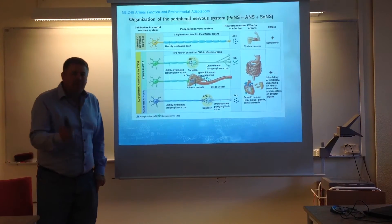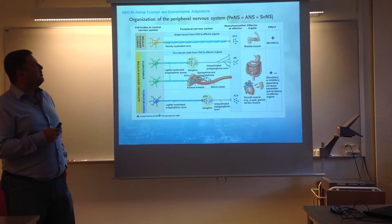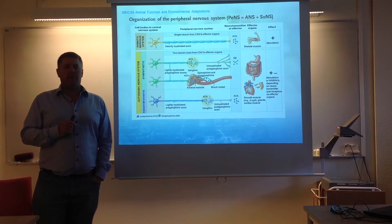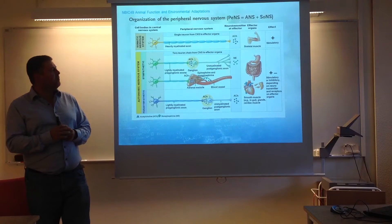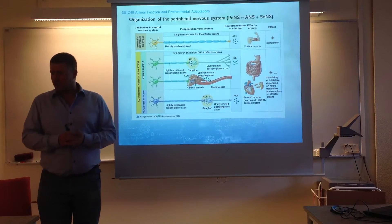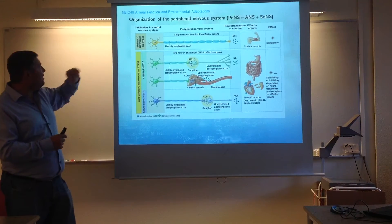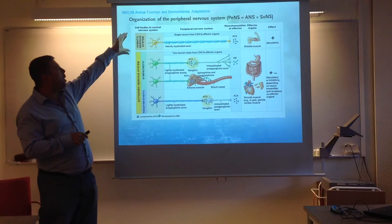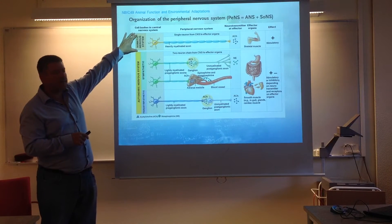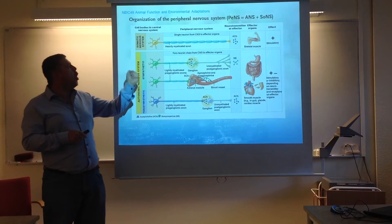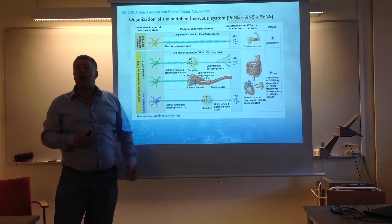To understand a little bit about the sympathetic nervous system, we need to understand its organization in the body, because it's always very difficult to understand how things work unless you can place them materially somewhere in the body. This is a view of the organization of the peripheral nervous system. The peripheral nervous system is composed of two parts: the somatic nervous system and the autonomic nervous system. The somatic nervous system is based on motor neurons that allow muscle activity.